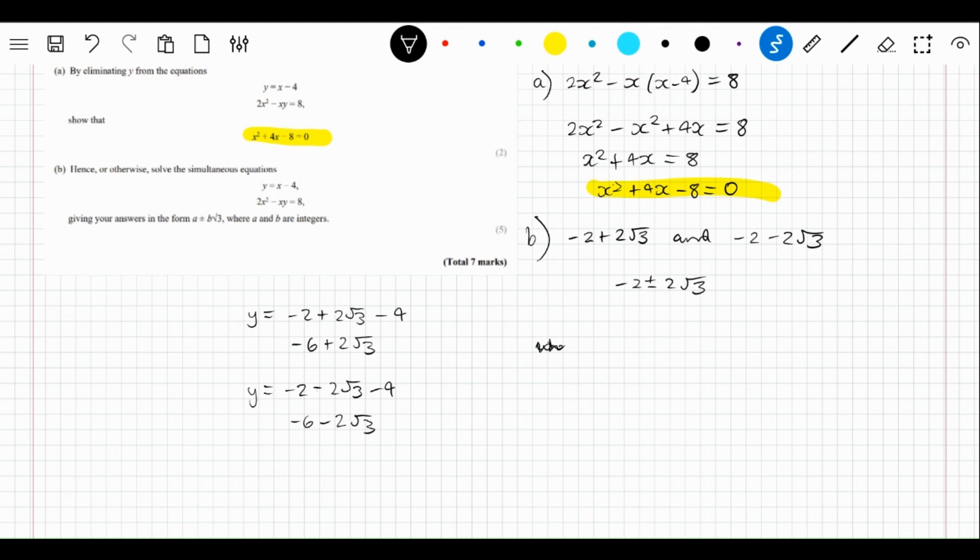Actually, we don't have to do that separately. Using this shorthand, we can say x equals minus 2 plus or minus 2 root 3, and y equals minus 6 plus or minus 2 root 3.